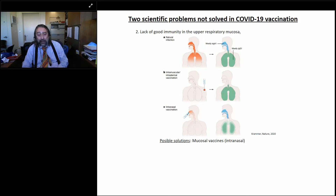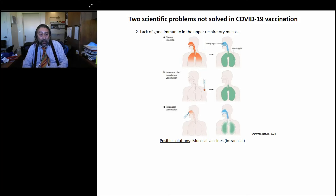If we have a natural infection, it starts in the upper respiratory tract, stimulating the immune system both locally and systemically — resulting in systemic antibodies that protect the lung, plus local secretory IgA antibodies in the upper respiratory tract that encounter the virus first. The vaccines we have are all intramuscular, so they do not stimulate well the immunity in the upper respiratory tract. One potential solution is intranasal vaccines, which may induce local immunity required for preventing infections and transmission.